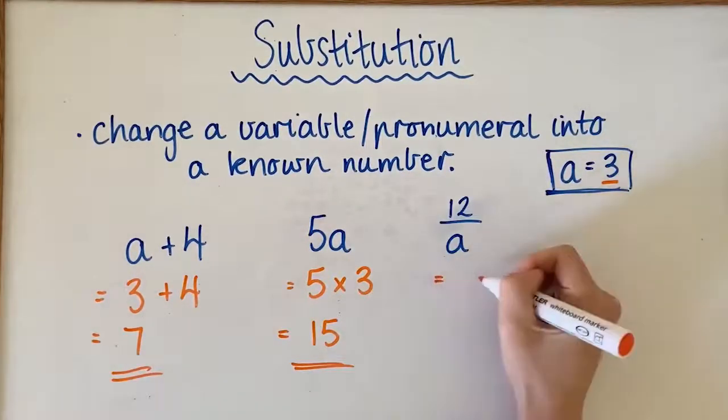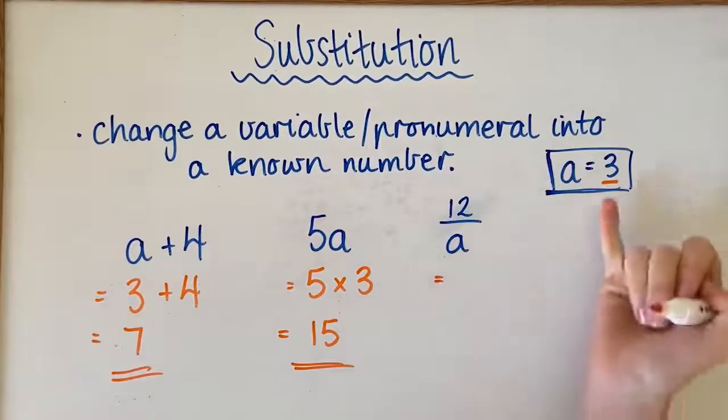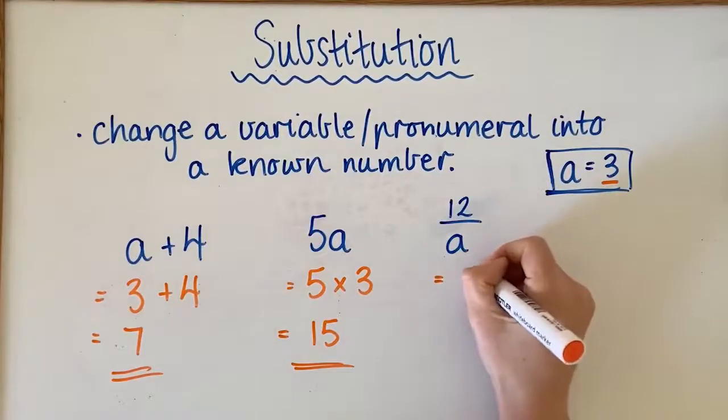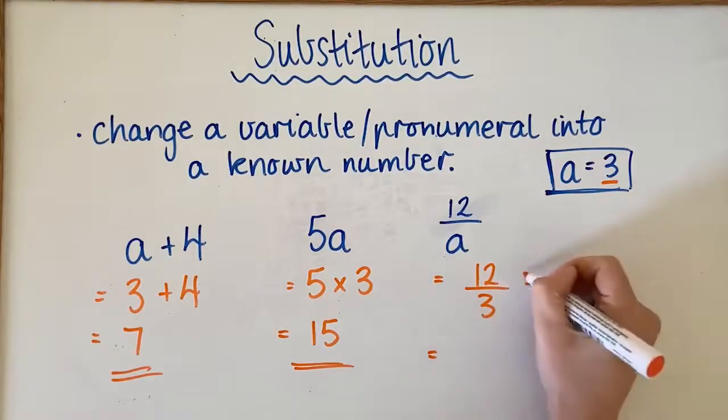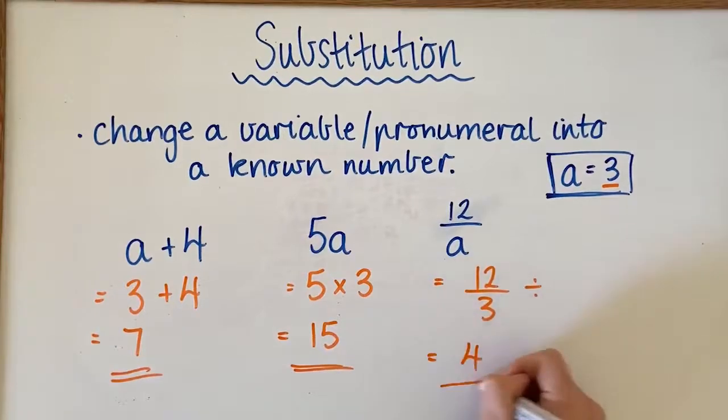In this example here, again, we're going to change our a to 3 because that's the value we've been given. So we're going to go 12 over 3, which is the same thing as division. We're going to get 4 for this one.